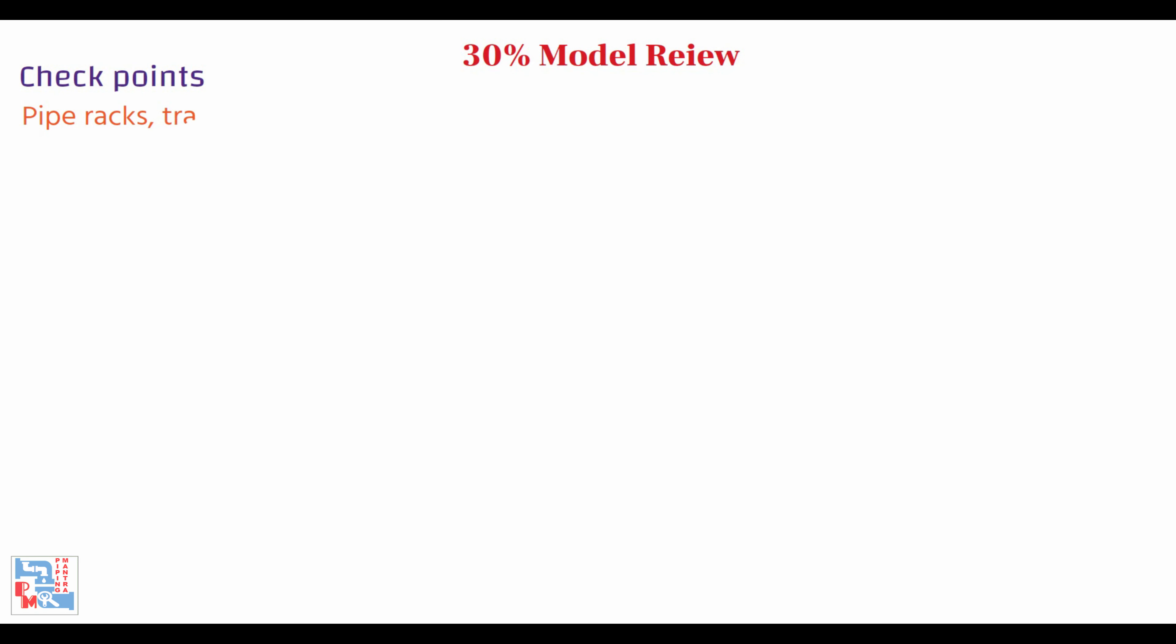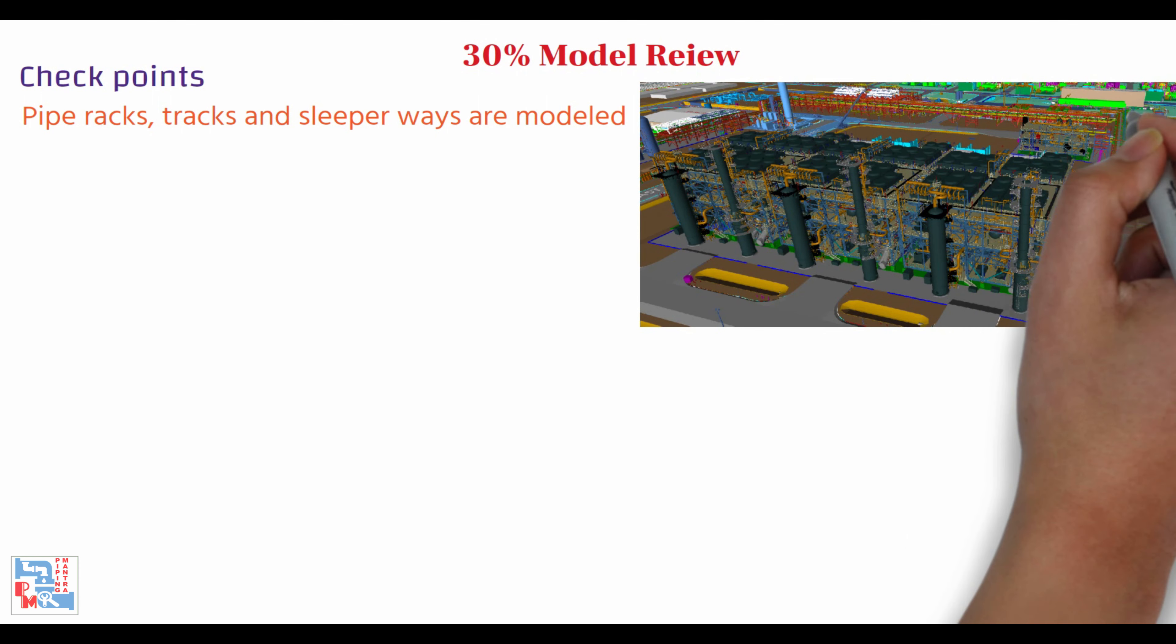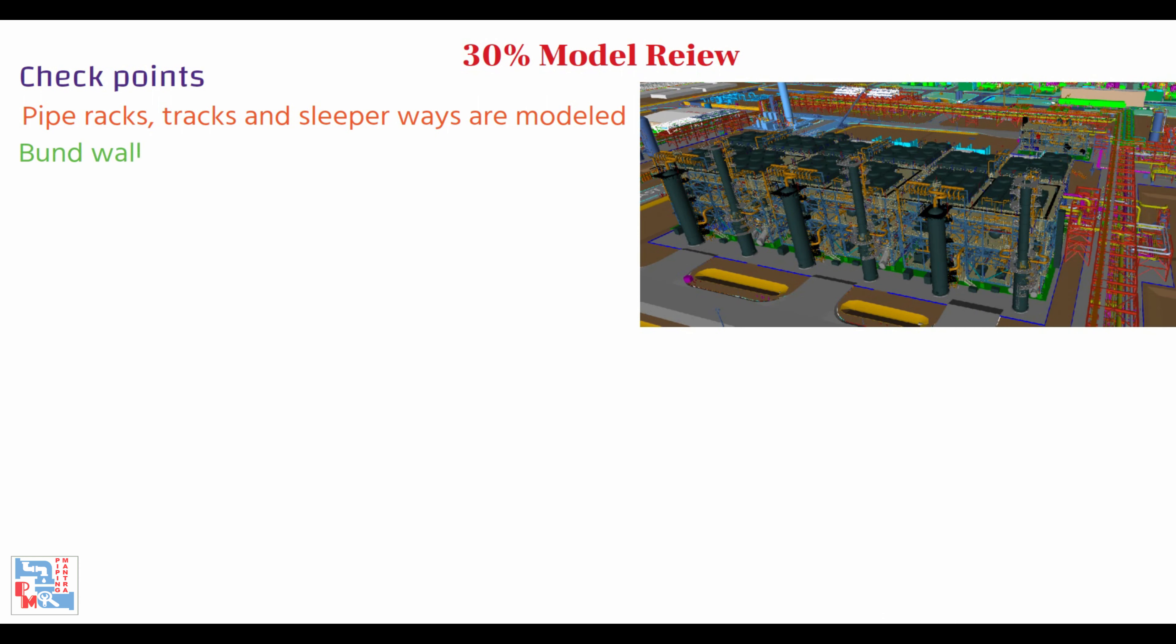The pipe rack tracks and sleeper ways are modeled and checked. Bund walls and firewall is modeled and checked. Separation distance within plots should be shown and spacing or inter-distances between the equipment or structure are checked. Roads and main accessways are modeled and checked.